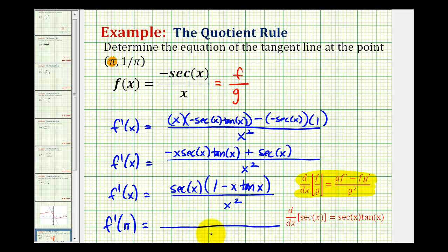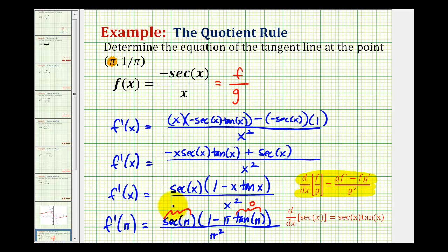f prime of pi is going to be equal to — the denominator is going to be pi squared. Here we'll have secant pi times the quantity one minus pi times tangent pi. Well, tangent pi is equal to zero, and secant pi is equal to negative one. So inside the parentheses we'll have one minus zero, or one. So we have negative one times one, all over pi squared. So the slope of our tangent line is going to be negative one divided by pi squared.